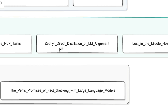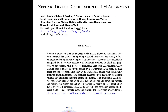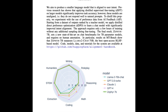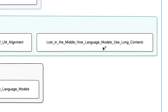Then 'Zephyr: Direct Distillation of LLM Alignment' — learning about efficient methods for aligning language models with human preferences. Lastly, 'Lost in the Middle: How Language Models Use Long Contexts,' where you discover the challenges LLMs face with long-range context and the potential solutions for it.